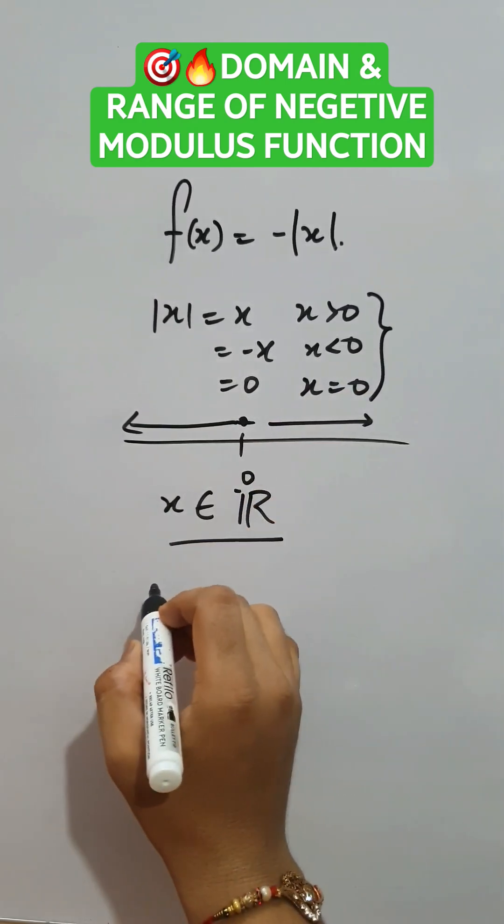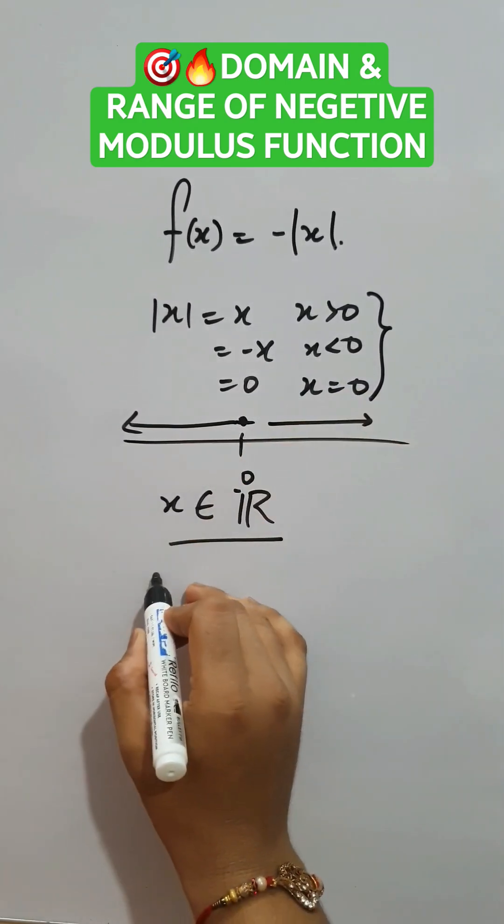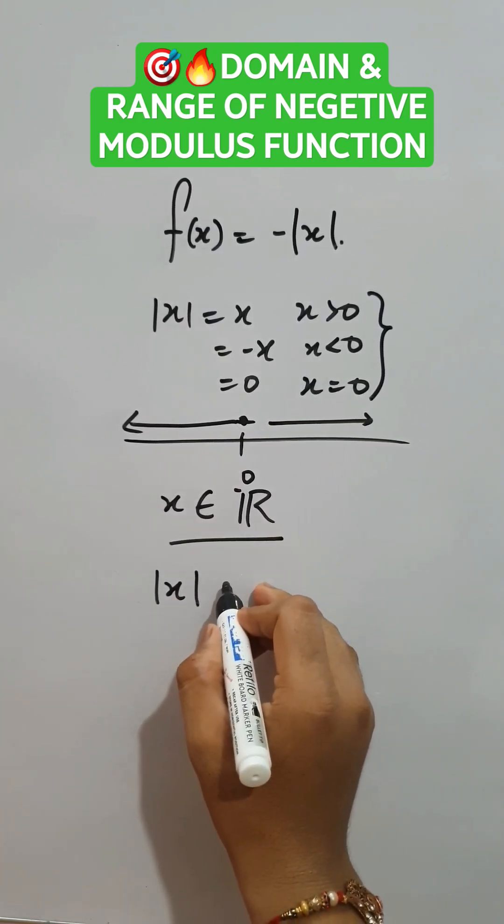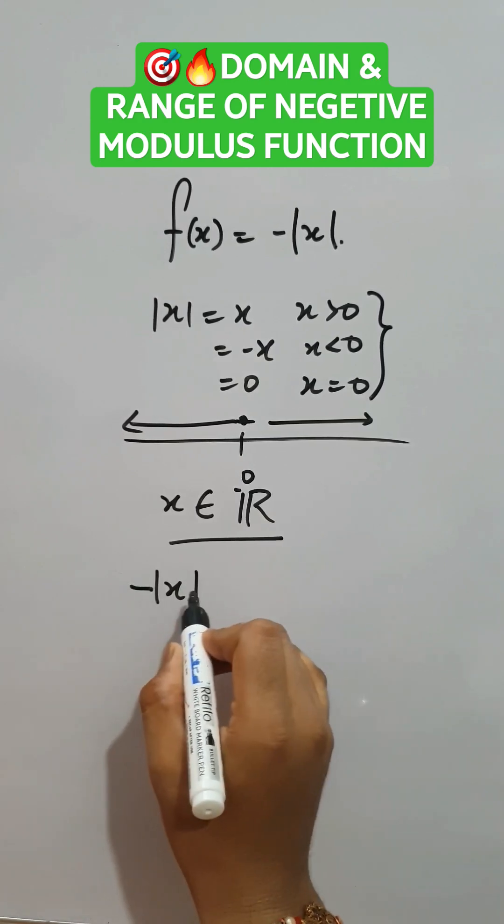Now, for the range function, we need mod x is always greater than 0 or equals to 0. So it's always positive. Since it's minus modulus of x,